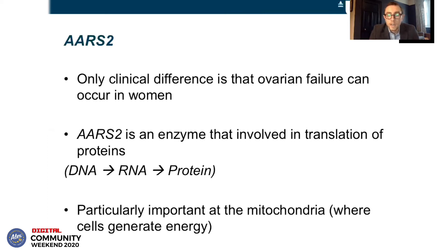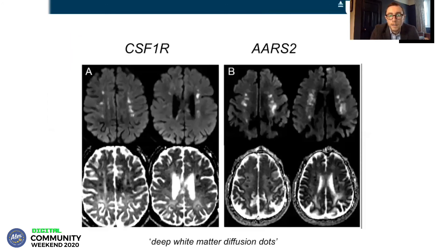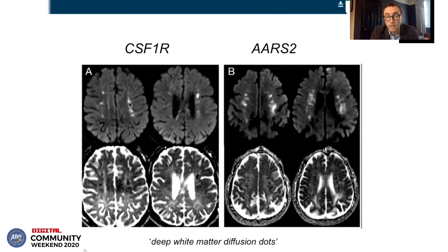There are some similarities in terms of translation of proteins between RS2 and another condition called vanishing white matter, and they do have some similar MRI appearances at times. CSF1R or HDLS can look very, very much like RS2 on MRI. A side-by-side comparison shows that most radiologists and imaging experts would think these scans look very similar, with lines of dots deep in the white matter of the CSF1R patient appearing very similar to RS2 patients. This is quite a specific sign — we don't see this in other conditions — and we call these deep white matter diffusion dots. We don't know exactly what they mean, but they are helpful in making a diagnosis.